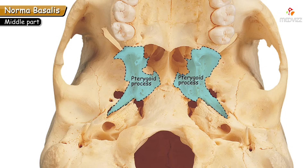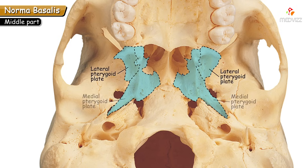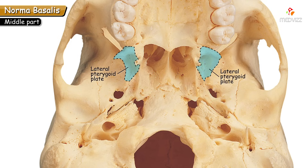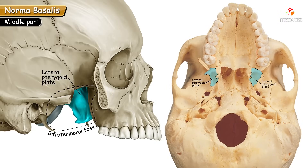The pterygoid process is a process from the sphenoid, present posterior to the last molar tooth — just behind the last molar socket. The pterygoid process shows two pterygoid plates: lateral and medial. The lateral pterygoid plate is quite broad and forms the medial wall of the infratemporal fossa, which is well appreciated in norma lateralis.